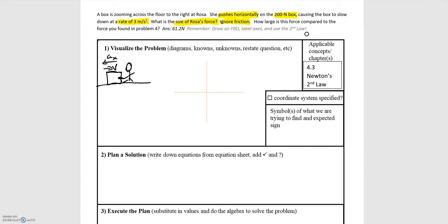Now that we've read the problem and highlighted the important parts, we can start with the problem-solving steps. The first step is to always choose your coordinate system. I'm going to have the positive y direction pointing upwards and the positive x direction pointing to the right. The next step is to draw a crude picture to help visualize things.